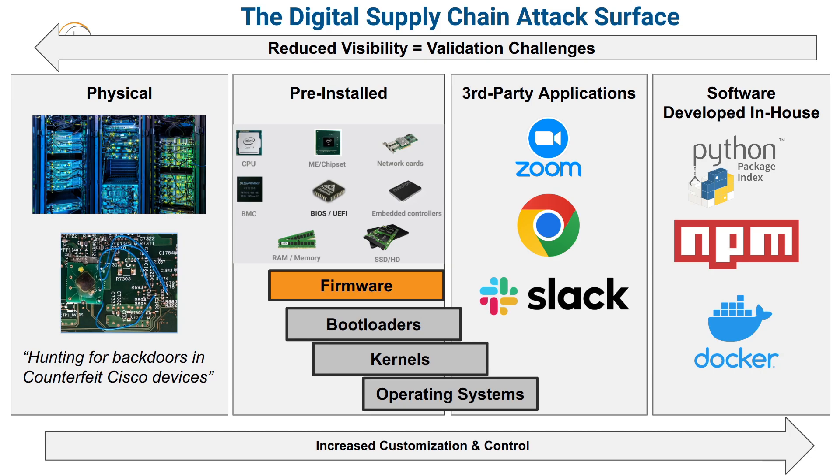When you get a computing device, there is pre-installed software on that device. The most popular category of pre-installed software is firmware — the software that comes on your devices and many of the components within your computer, pre-installed from the manufacturer. As we move slightly up the stack, you have bootloaders, kernels, and operating systems — all in the pre-installed category, since you typically would not run a computer without an operating system. Things like a bootloader and a kernel are lower-level components that are often not visible to the user.